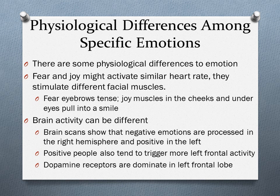Brain activity can also differ: brain scans show negative emotions are processed in the right hemisphere and positive emotions more in the left hemisphere. Positive people tend to trigger more left frontal lobe activity — this is where a lot of dopamine receptors are dominant, which may be what makes them so positive.